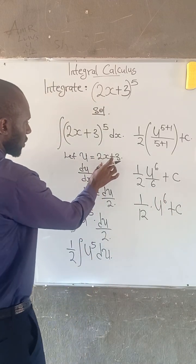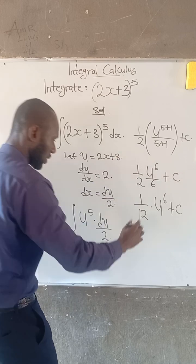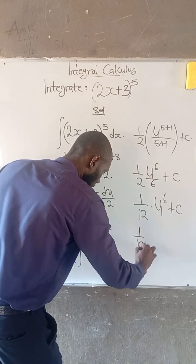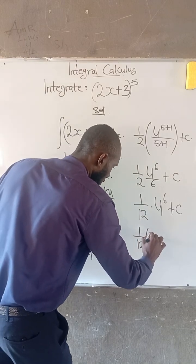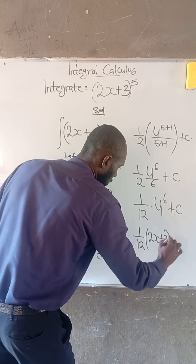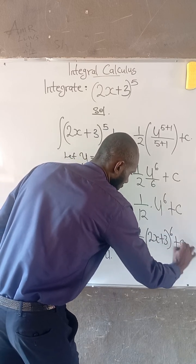But recall that u is given as 2x + 3. So we have that 1/12 times (2x + 3) to the power of 6 plus c.